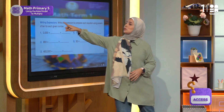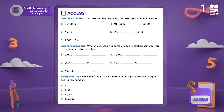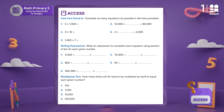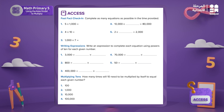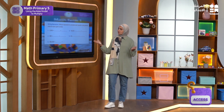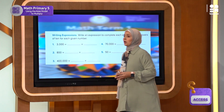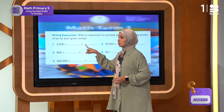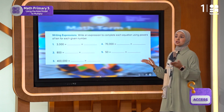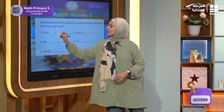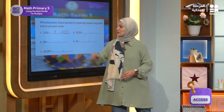What is my next activity? It's called writing expressions. We're asked to write an expression to complete each equation using the powers of 10 for each given number. So for instance, if I look at number one, I see 3,000 equals the product of two numbers. I can choose anything I want — for instance, 3 times 1,000.